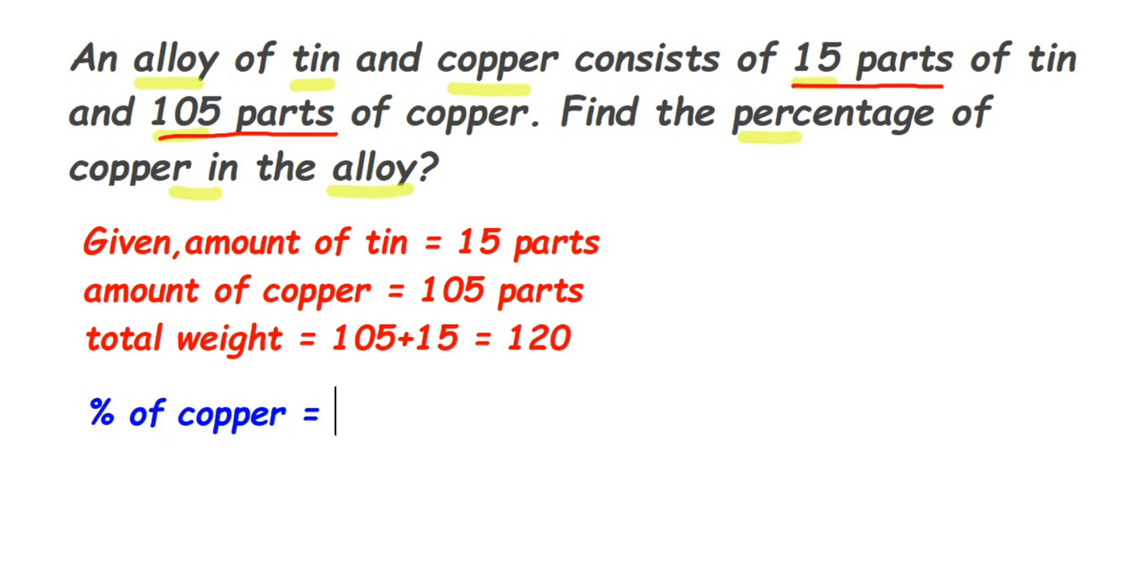So percentage of copper will be equal to, it is 105 divided by 120. And then we're going to multiply it with 100. So let me just write it once again. So it will be 105 out of 120. Now, since we're finding out the percentage, we're going to multiply with 100. Now do the cancellation, cancel the numbers.